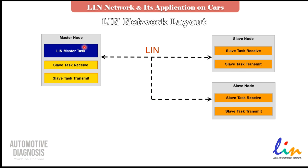The master node is your control unit; the slave nodes are your sensors. CAN bus is a multi-master network — all units connected can share, receive, and request information. But on LIN, we only have one master and multiple slaves. For example, in a parking assist system, the master node is the control unit and the slave nodes are all the parking sensors — potentially more than 10.